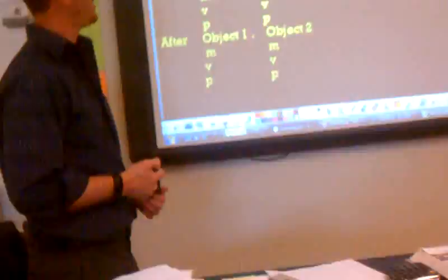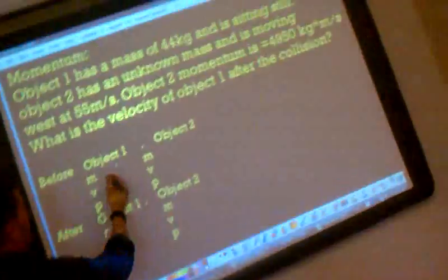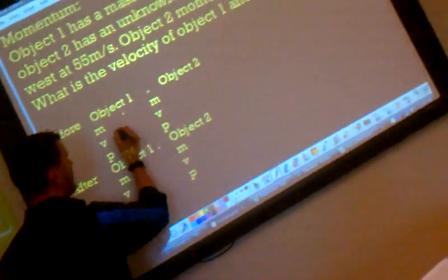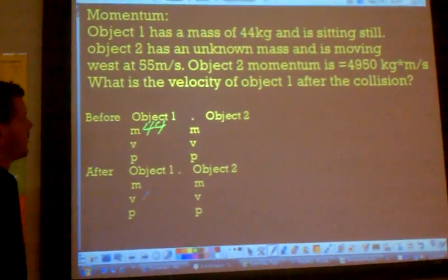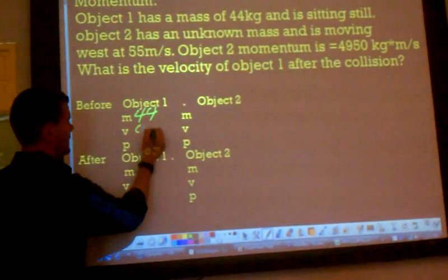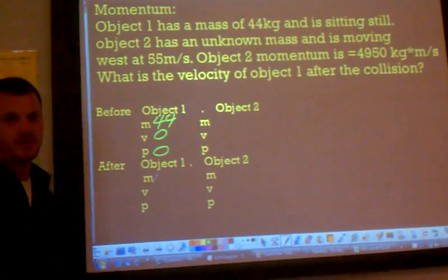I'll do one more. I'll do one more and then I'll give you an answer to the next one. This one. Object one has a mass of 44 kilograms. Mass of 44 kilograms. And it stays still. Velocity is zero. So its momentum is zero.